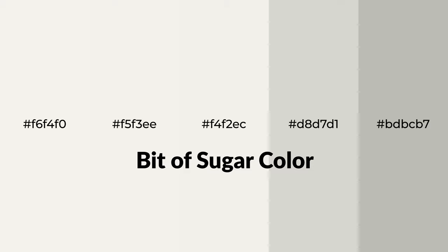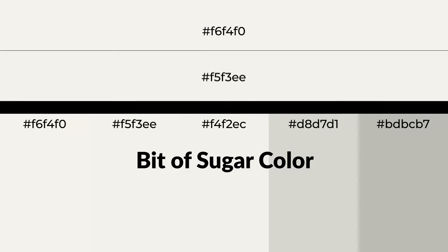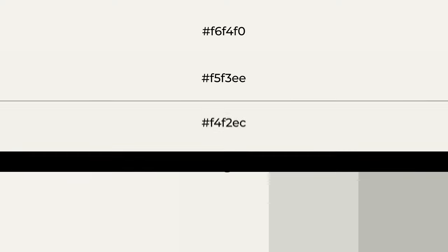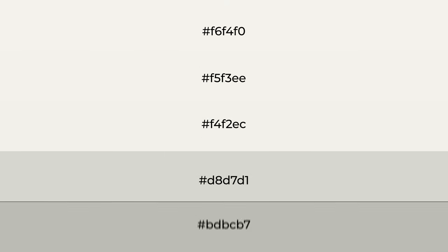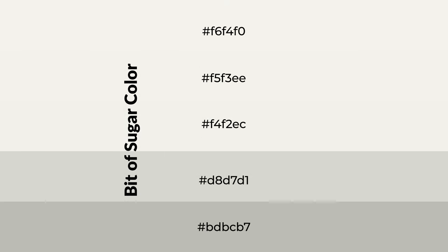Warm shades of Bit of Sugar color with gray hue for your next project. To generate tints of a color, we add white to the color. Tints create light and exquisite emotions. To generate shades of a color, we add black to the color. Shades are used in patterns, 3D effects, and layers, and they create depth and drama.